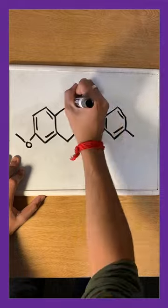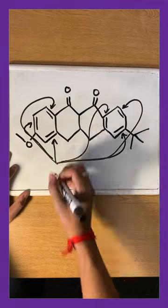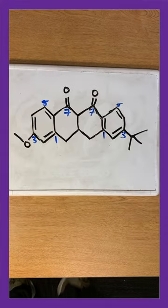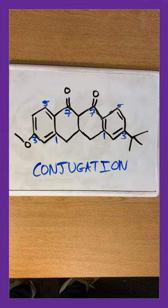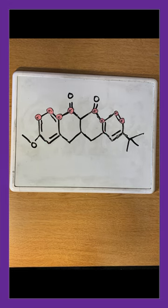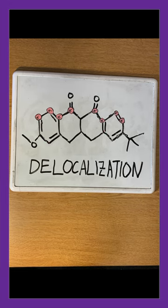The molecule avobenzone actually does this through its cool use of double bonds. On it, you'll notice an alternating pattern of these bonds, and they contribute to what's known as a conjugated system. The electrons in these double bonds are delocalized, meaning that they move around or resonate throughout the molecule.